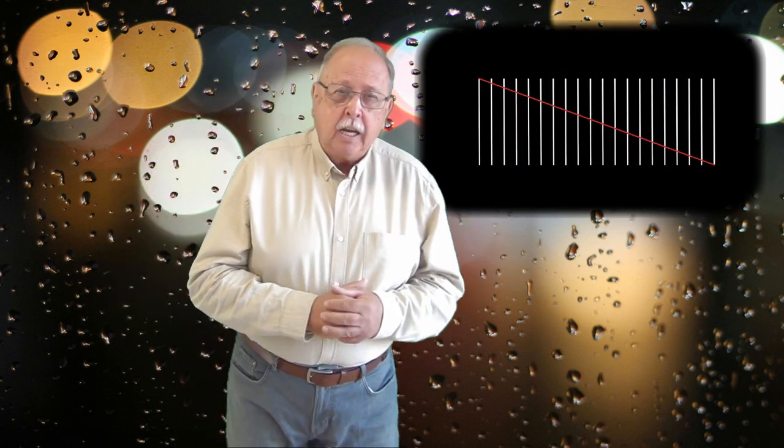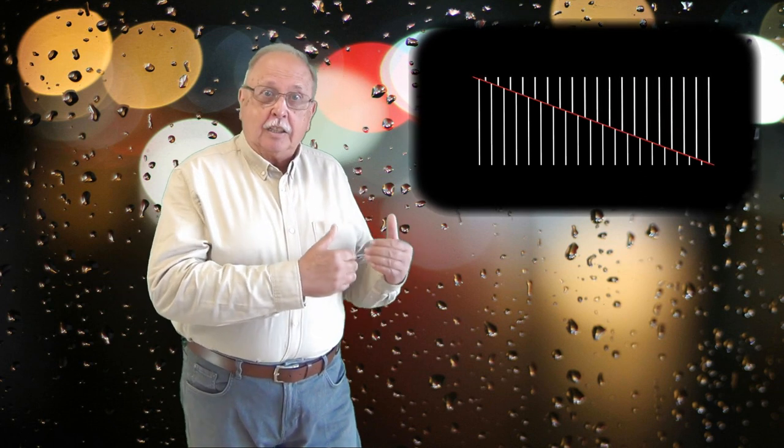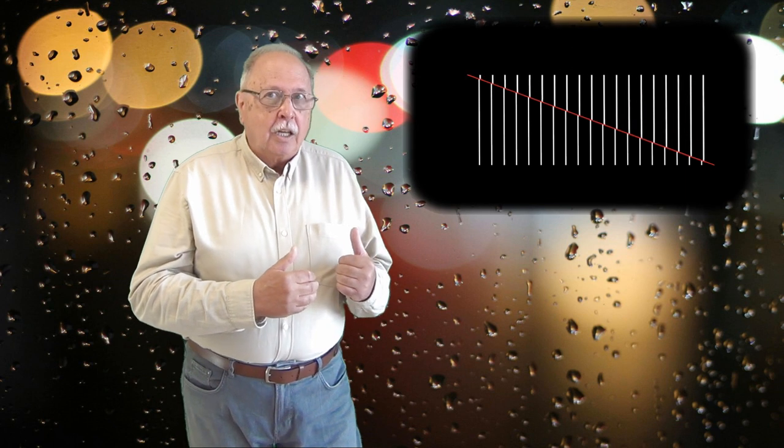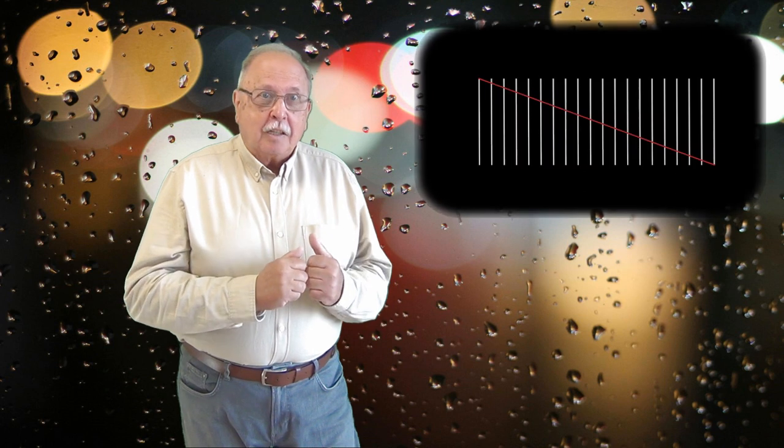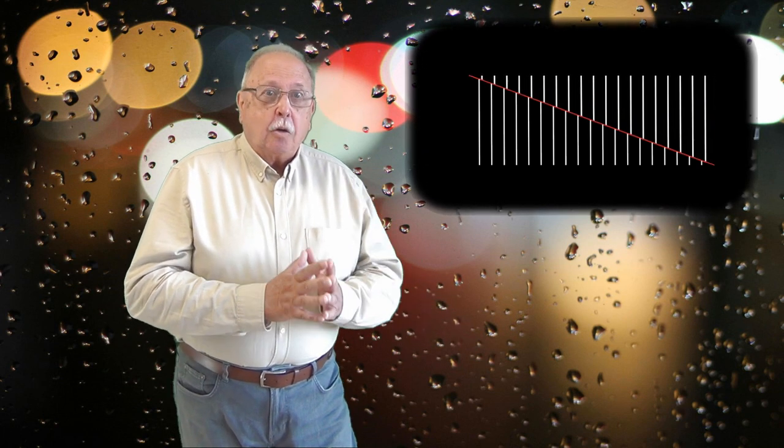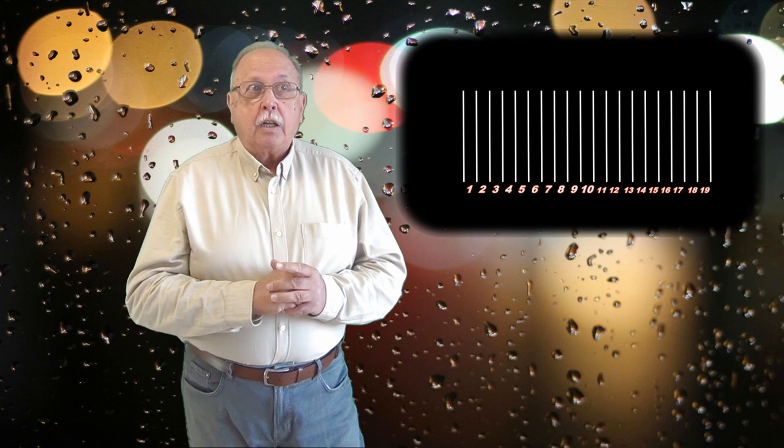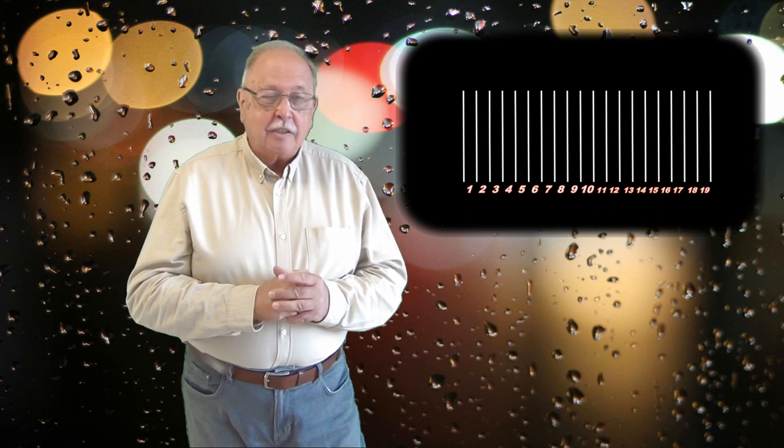Sârmele din dreapta unei perechi se sudează de ceea ce a mai rămas după tăiere din cele din stânga și rezultă, pentru fiecare pereche, ăsta e lucrul important, câte o bucată de sârmă un pic mai lungă. Asta se întâmplă cu fiecare pereche de sârme care se găsesc de o parte și de alta a unui spațiu delimitat de ele. Și pentru că 20 de sârme au doar 19 spații între ele, prin lipire rezultă doar 19 bucăți de sârmă.